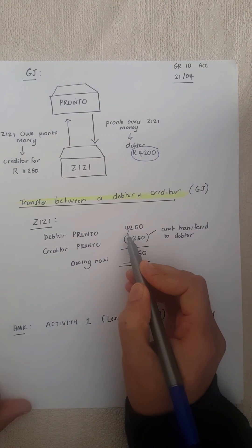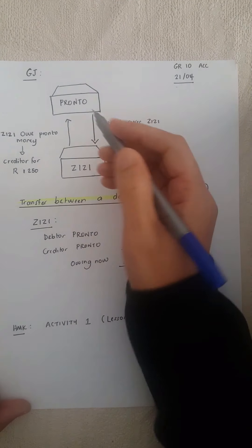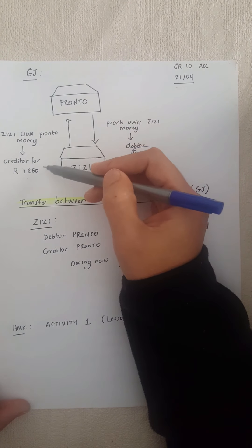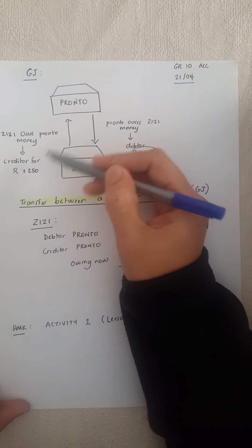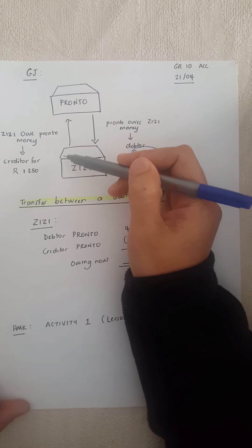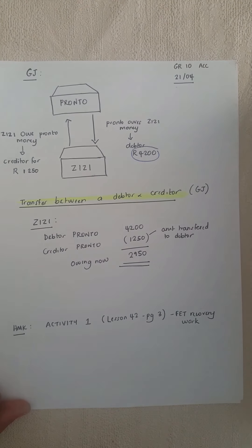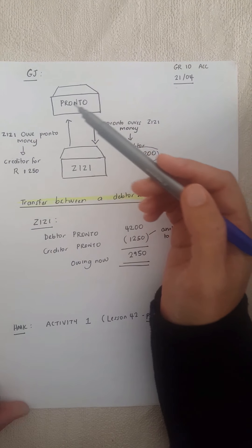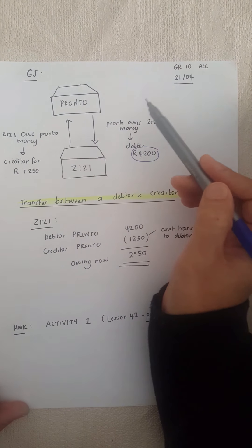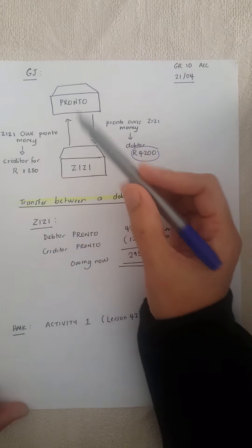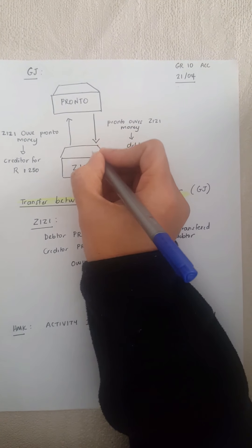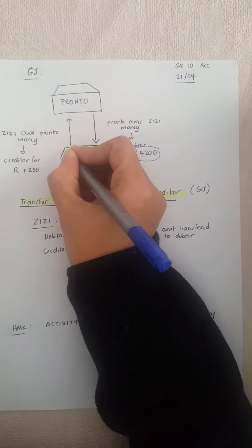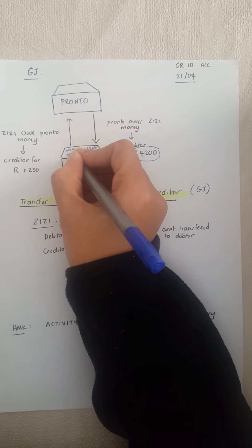So they've got a debtor, Pronto, who owes 4,200 rands. Then ZZ went to the same company, Pronto, and owes them 1,250 rands. So they've got Pronto as a creditor in their books for 1,250 that they are owing Pronto. So they've got the same business as both a debtor and a creditor. Here in ZZ's books, they've got Pronto as a debtor and they've got Pronto as a creditor.